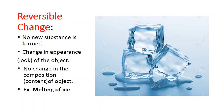We can see here in the picture: ice cubes are solid and how they look after melting in liquid form. So in reversible change, no new substance is formed, there is change in the appearance of the object, and no change in the composition of the object.